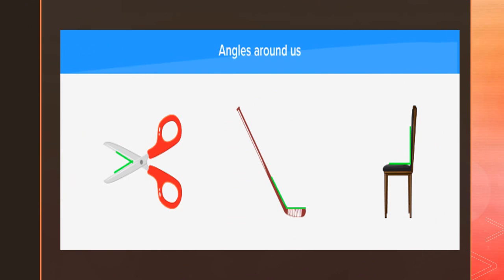We can find angles in various things around us, such as a pair of scissors, a hockey stick, a chair, and so on.